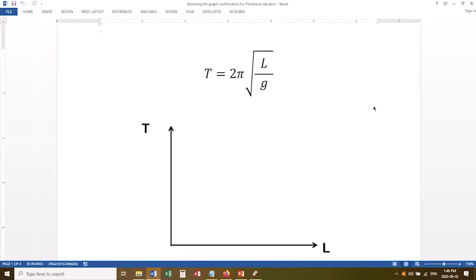Now let's talk about the theory for a moment. This is the equation that governs a pendulum. The time it takes to swing back and forth once, the period T, is related to the length of the pendulum L by this equation. Your job in this experiment is to graphically verify this relationship.